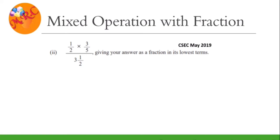All right, so the first question that we have is: half times three-fifths, divided by three and a half. Whenever you're given a fraction question, the very first thing I will implore you to do is to always change those mixed numbers into improper fractions.